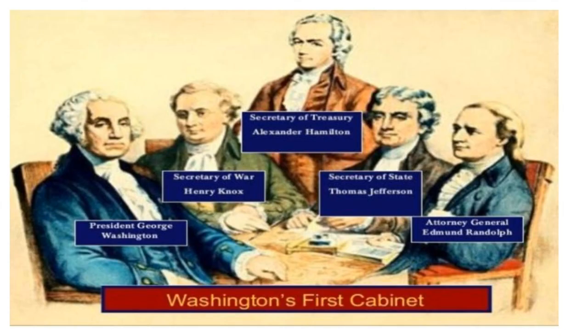Washington's cabinet. The Constitution gave Congress the power to create departments to help the president. The president appointed the heads of these departments, which became his cabinet. Washington chose Henry Knox as Secretary of War, Thomas Jefferson as Secretary of State, and Alexander Hamilton as Secretary of the Treasury. To help him with matters of law, Washington picked Edmund Randolph as the attorney general. These department leaders were called together to advise Washington, and since then, other presidents have followed this example.